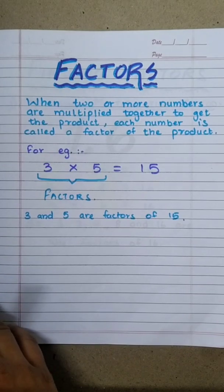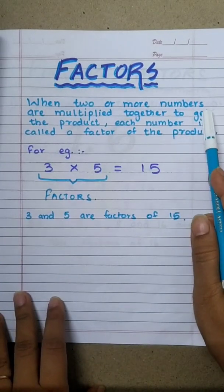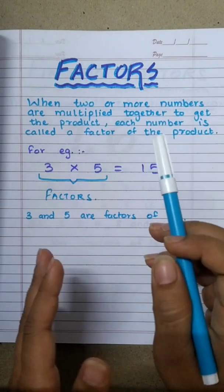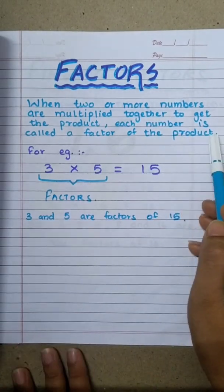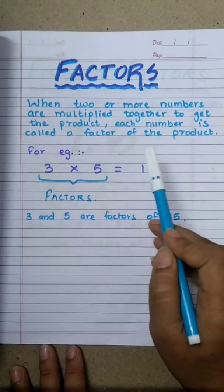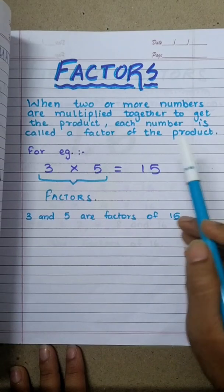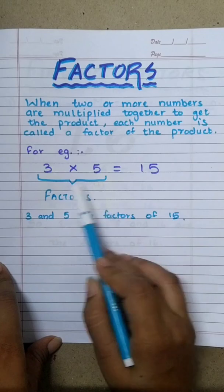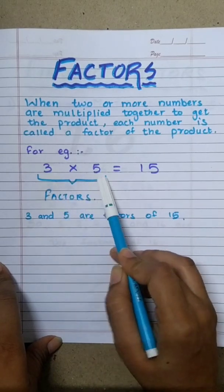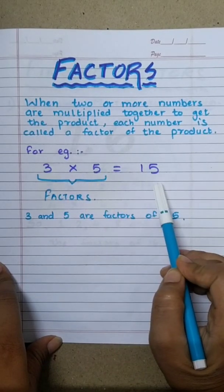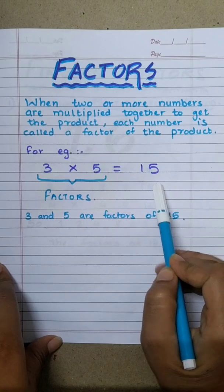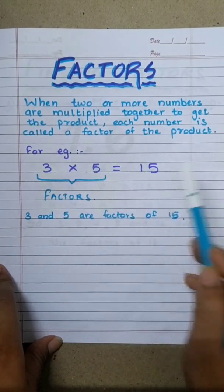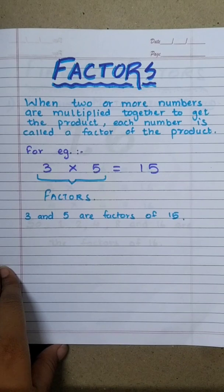Factors. When two or more numbers are multiplied together to get the product, each number is called a factor of the product. For example, when 3 and 5 are multiplied with each other, we get 15. So, this means that 3 and 5 are the factors of 15.